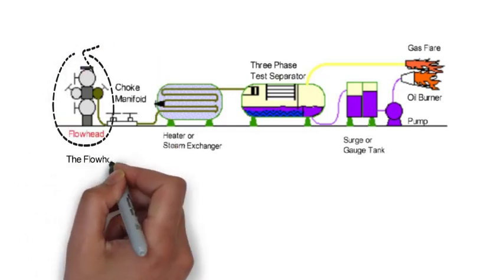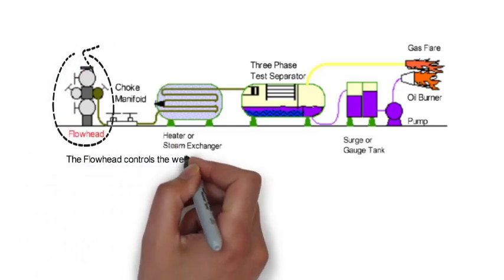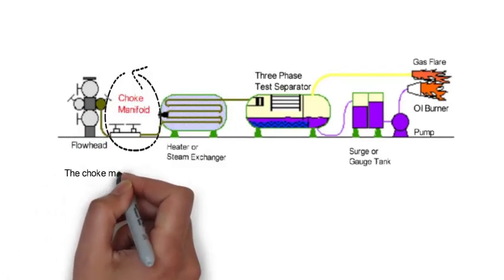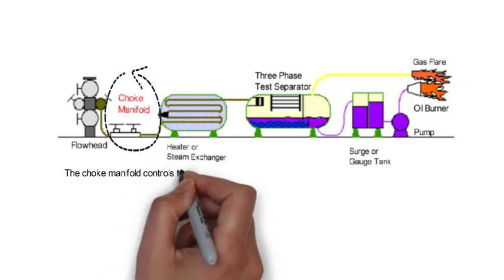The flow head controls the well pressure. The choke manifold controls the flow and the pressure.